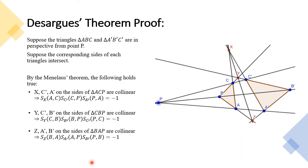Let's prove the Desargues theorem. We're going to use Menelaus's theorem in our proof. Please refer to the definition in the extended abstract. Notice that the points X, C', and A' on the sides of the triangle ACP are collinear. So by Menelaus's theorem, the signed ratio of point X on the line AC times the signed ratio of point C' on the line CP times the signed ratio of point A' on the line PA will equal negative 1.